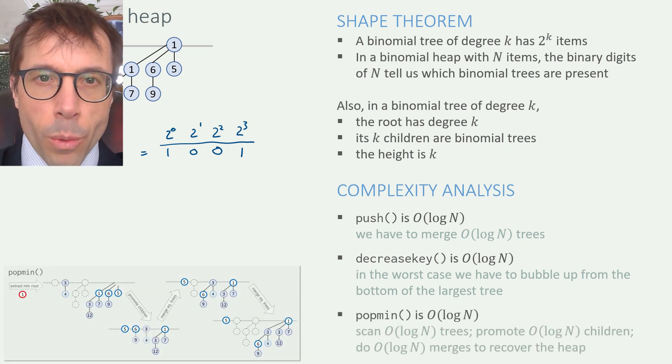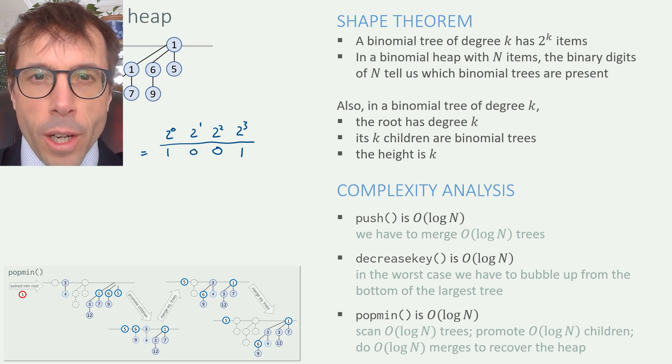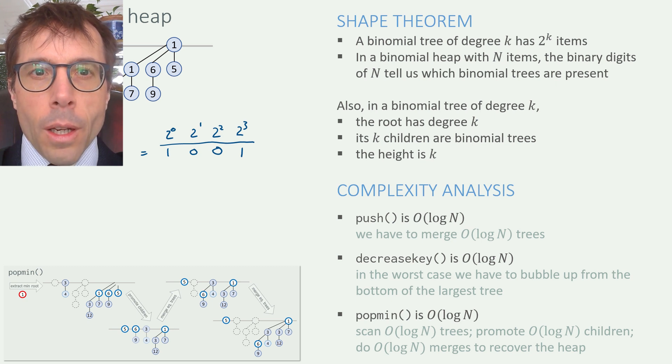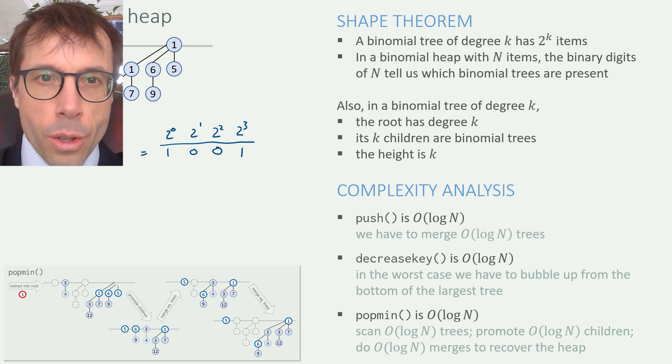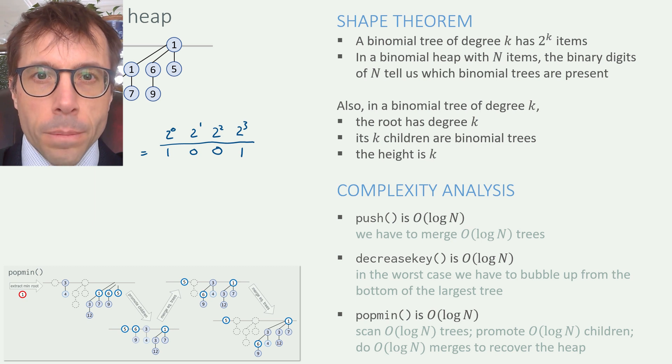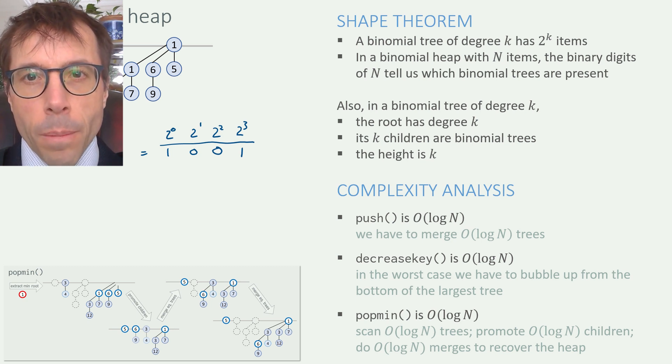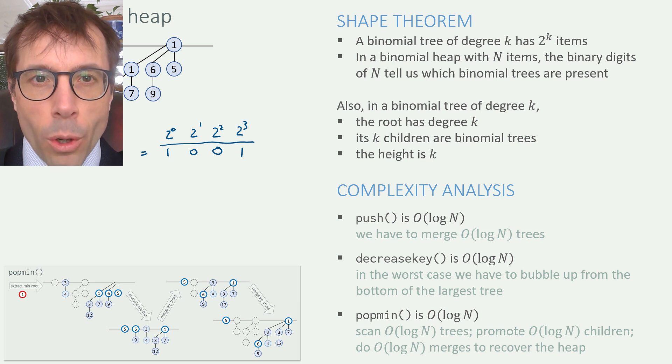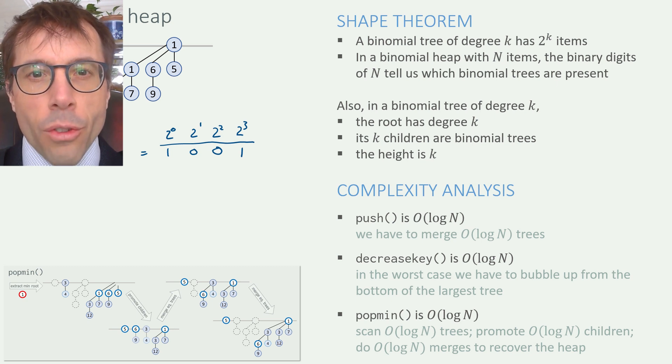Finally, pop min. This one was a bit more involved. First, we had to find the minimum item by scanning the roots of all the trees, and there are O(log N) trees, because that's how many digits there are in the binary expansion of n. Next, we extract the root of this tree and we promote its children, and the number of children is equal to the degree of the tree, which is O(log N). Finally, we have to do a whole bunch of merging trees of equal degree to get back to a binomial heap. This is actually just like adding together two binary numbers, one number corresponding to tree sizes from our original heap, the other corresponding to the tree sizes of the nodes that just got promoted, and both numbers have O(log N) digits, therefore the total number of mergers is O(log N).